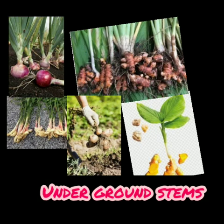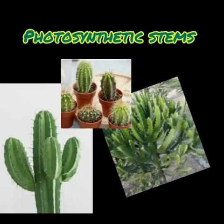The next adaptation is underground stems which store food. Example, turmeric, ginger, onion, etc. Some stems are green — they are photosynthetic stems. For example, cactus.